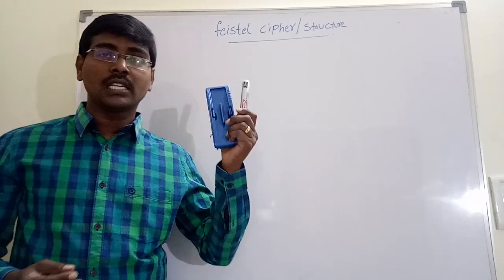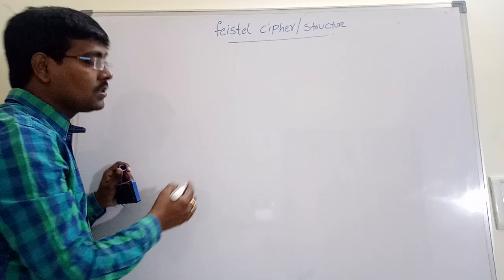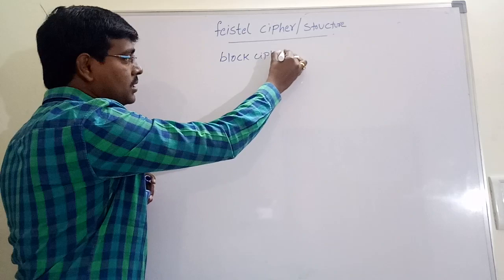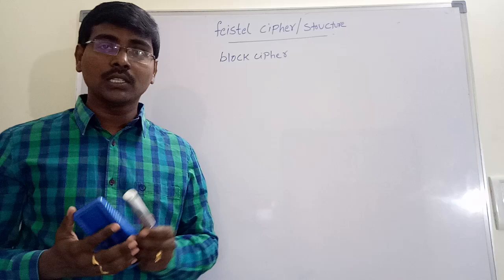In this session, we will discuss Feistel Cipher or Feistel Structure. Generally, this Feistel Cipher follows a Block Cipher approach. Block Cipher means divide the text into different number of blocks, performs operations on each block. Now, coming to this Feistel Cipher...